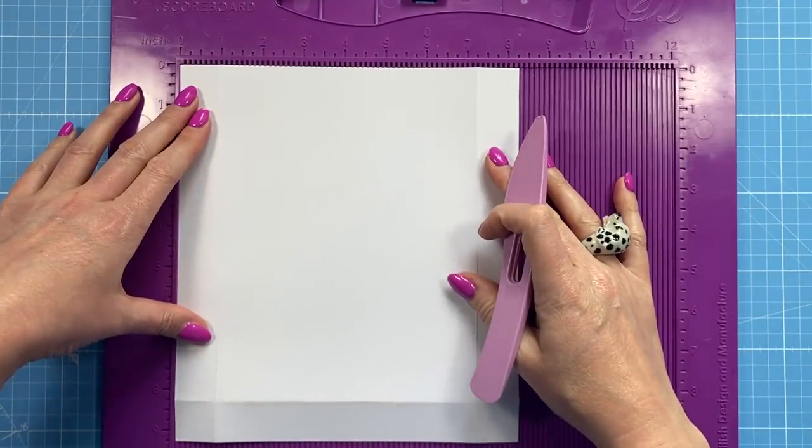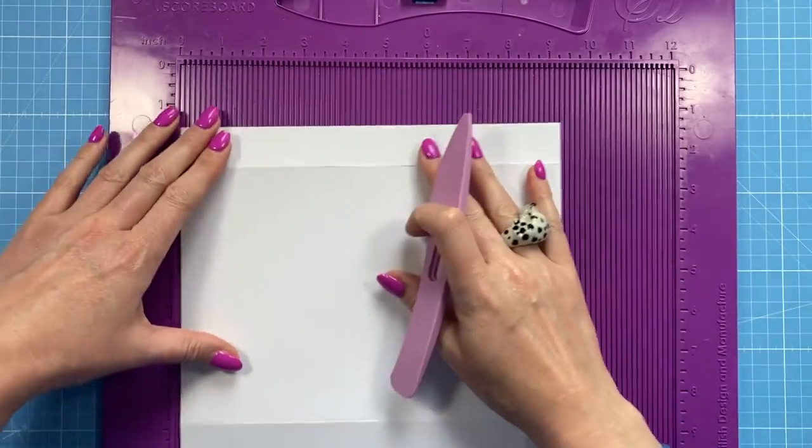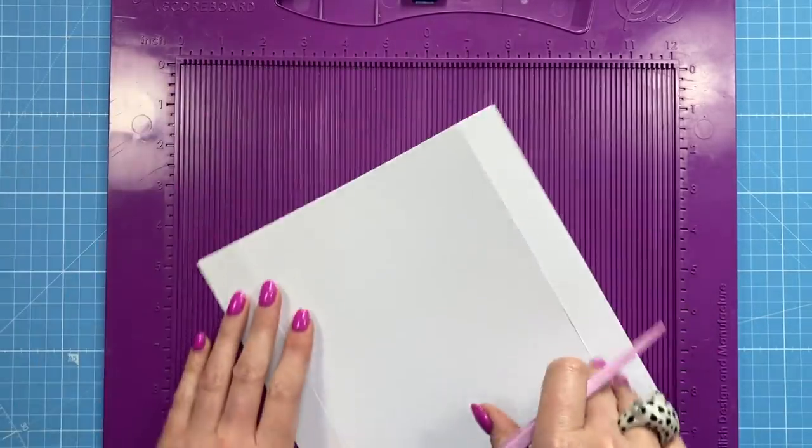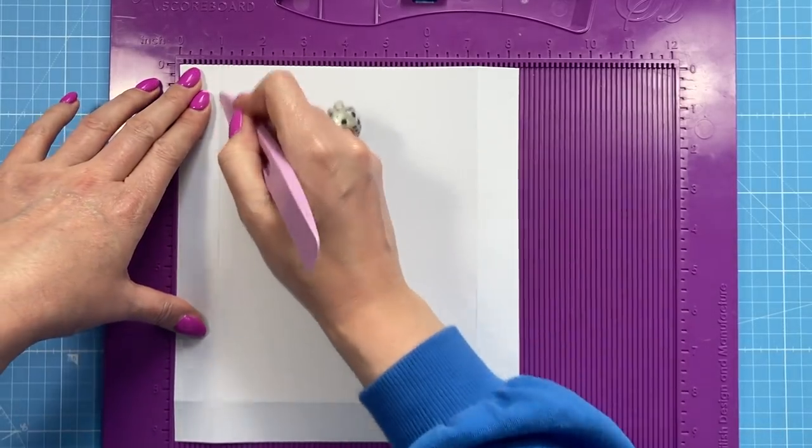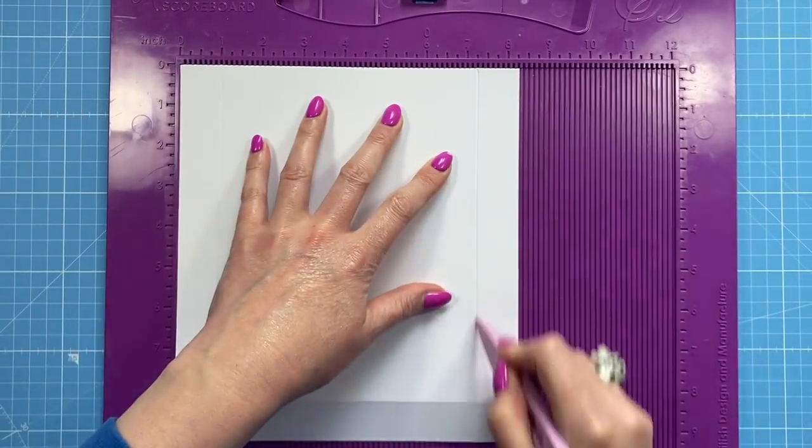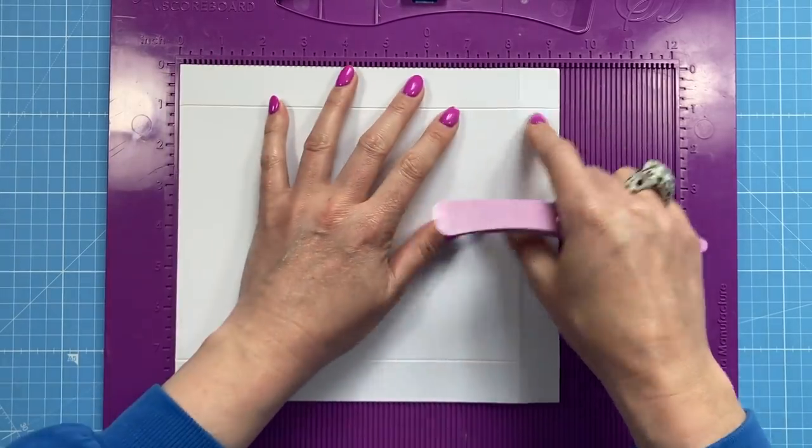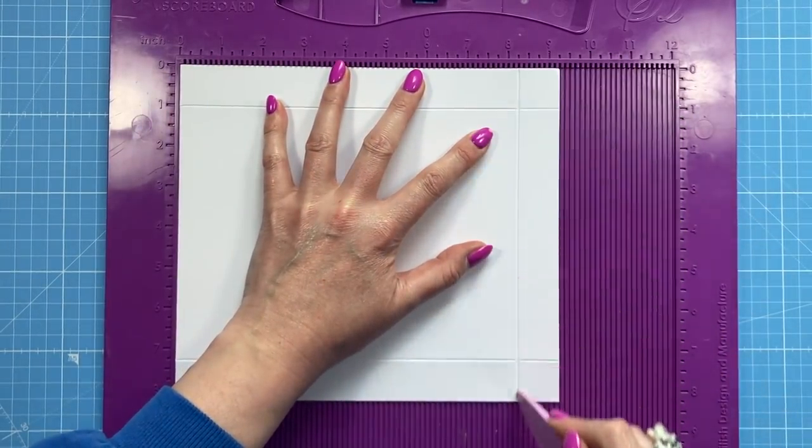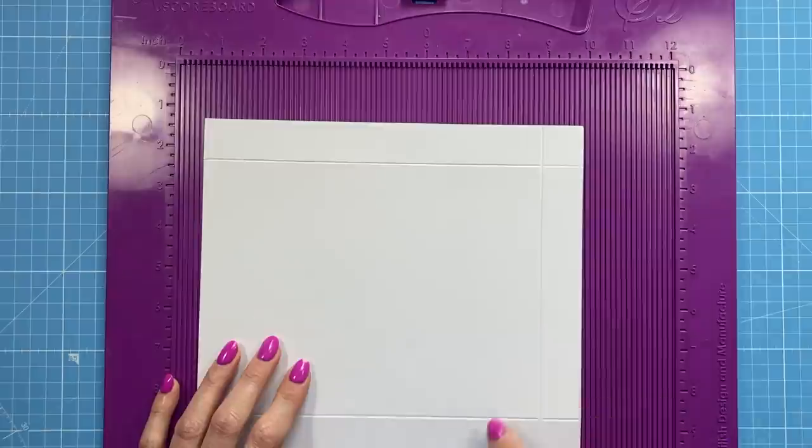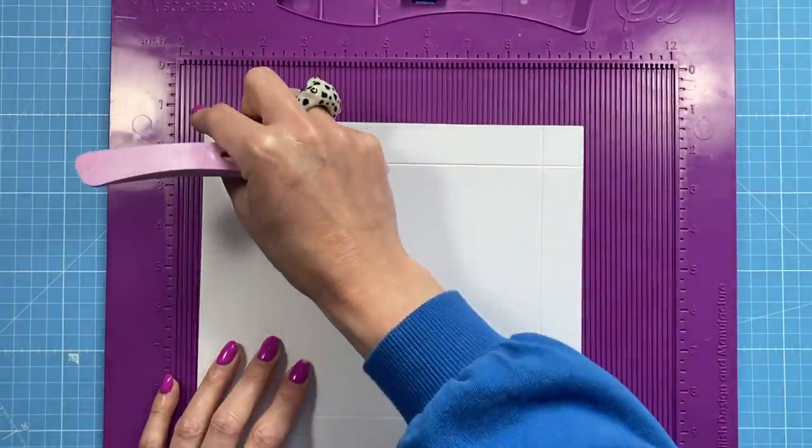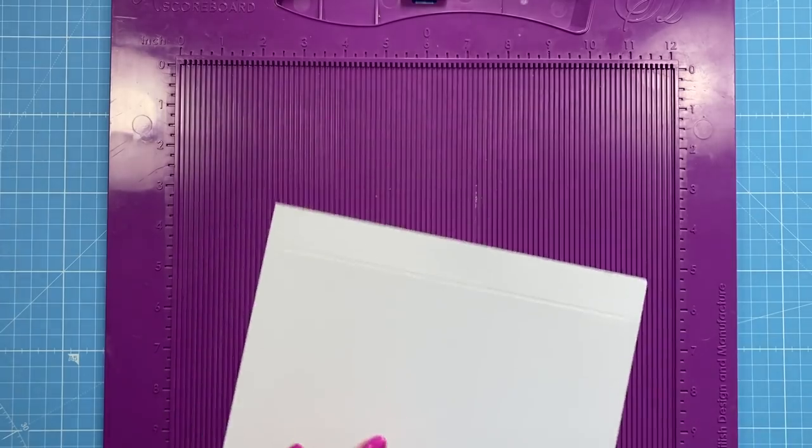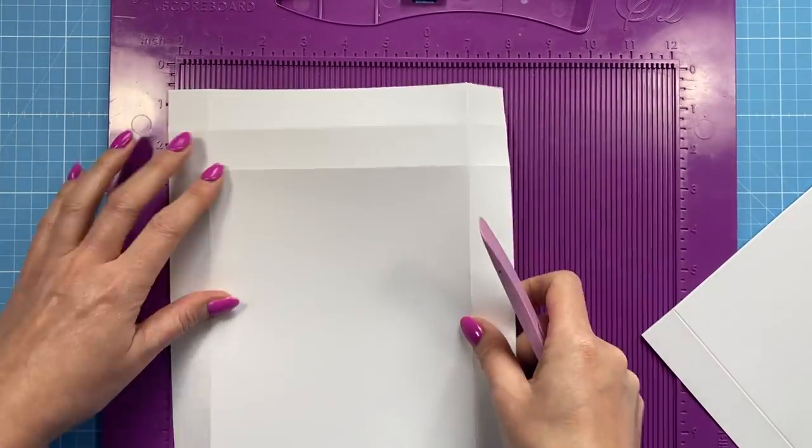Okay, so first of all, you want a piece of 8 and a quarter by 9 and a quarter. Along the 8 and a quarter side, you're going to score at 1 and 7 and a quarter, and then along the 9 and a quarter, you're going to score at 8 and a quarter. Basically, you've got a 1-inch section or side on three of the sides.